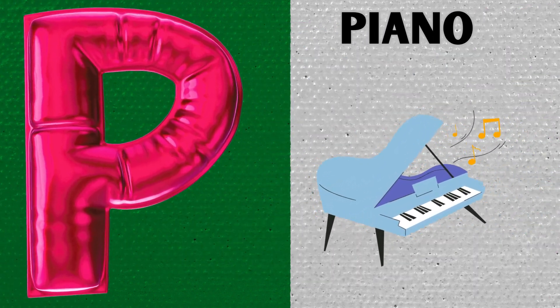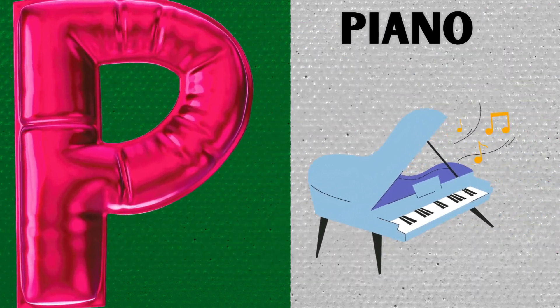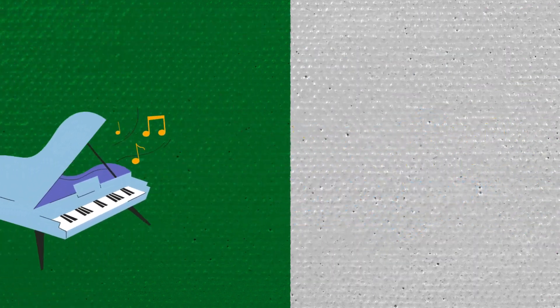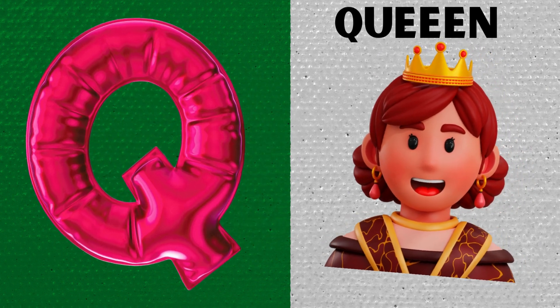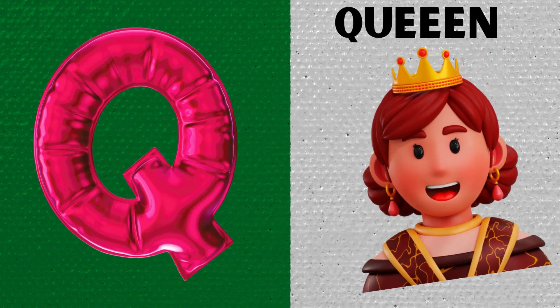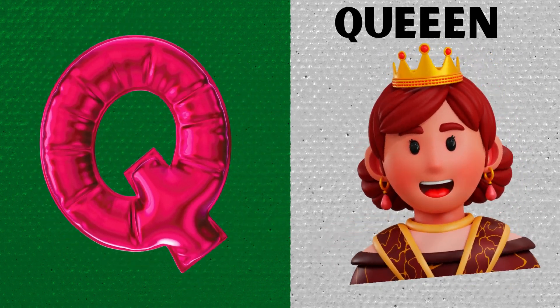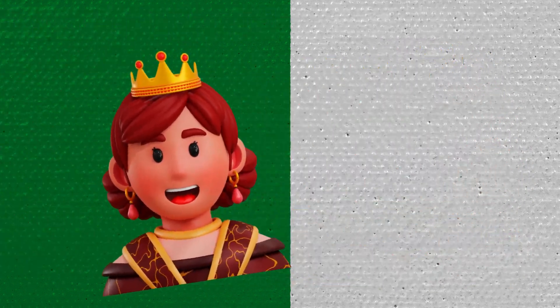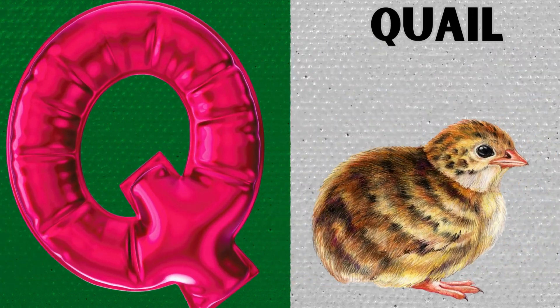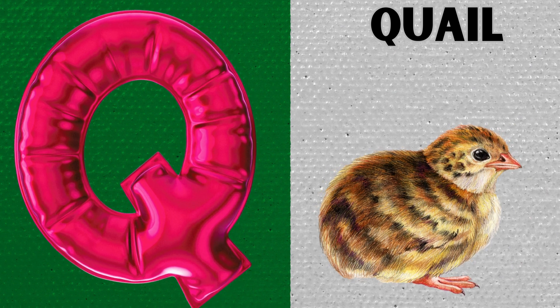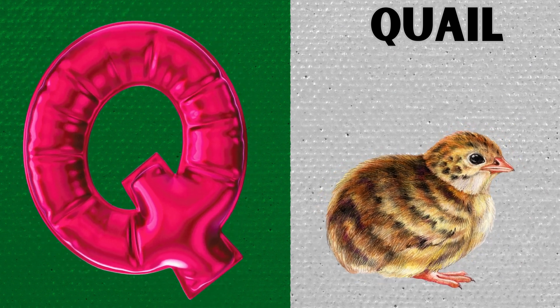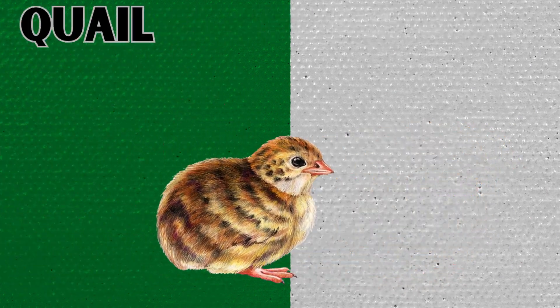P is for Piano. P, P, Piano. Q is for Queen. Q, Q, Queen. Q is for Quail. Q, Q, Quail.